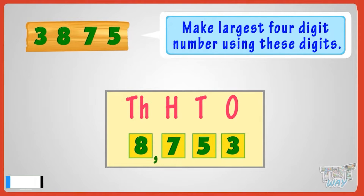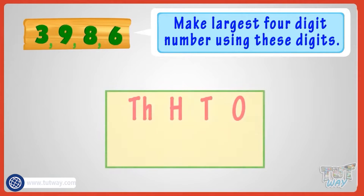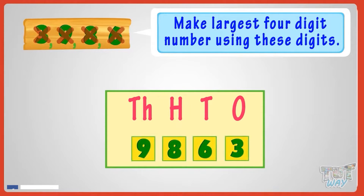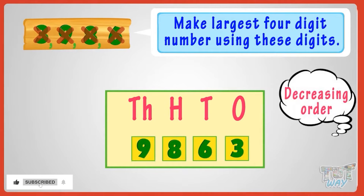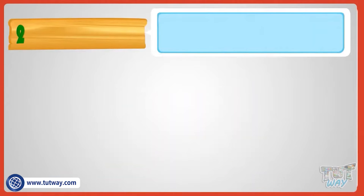Let's take another example. Here are four numbers, and we have to make the largest number using these numbers. Arrange the numbers from largest to smallest, and your largest number is ready. Nine thousand eight hundred and sixty-three is the largest number that can be formed.